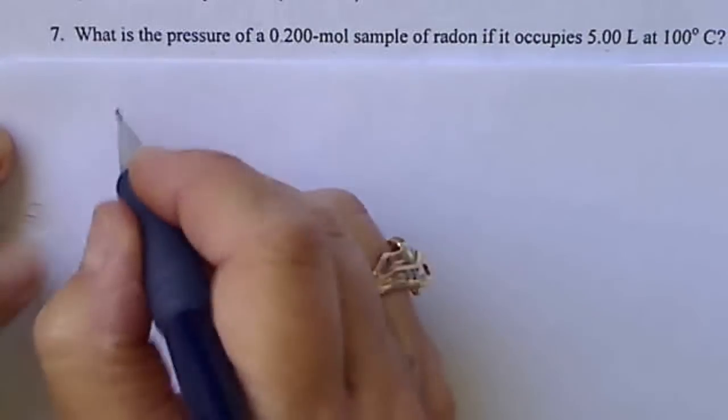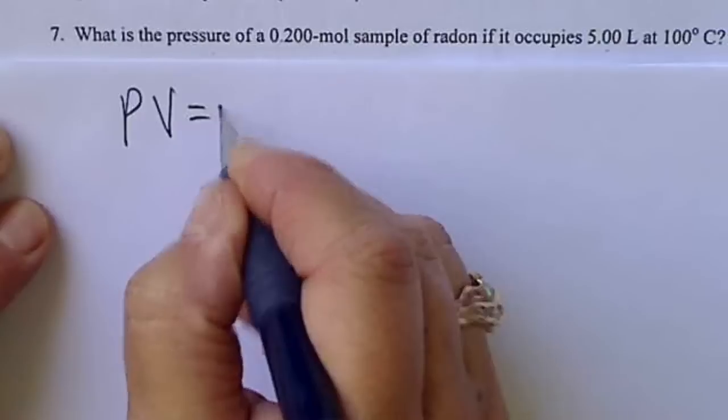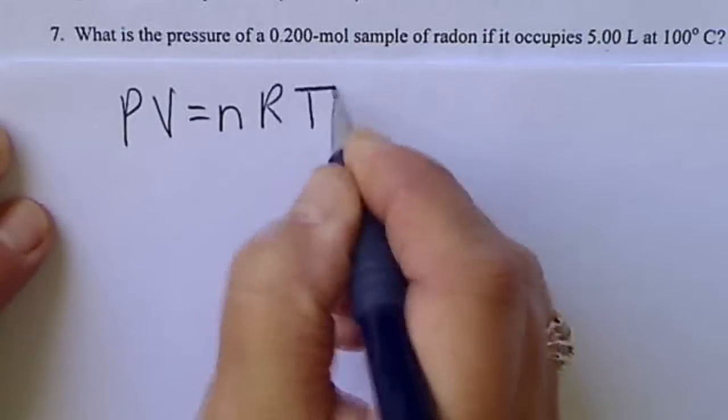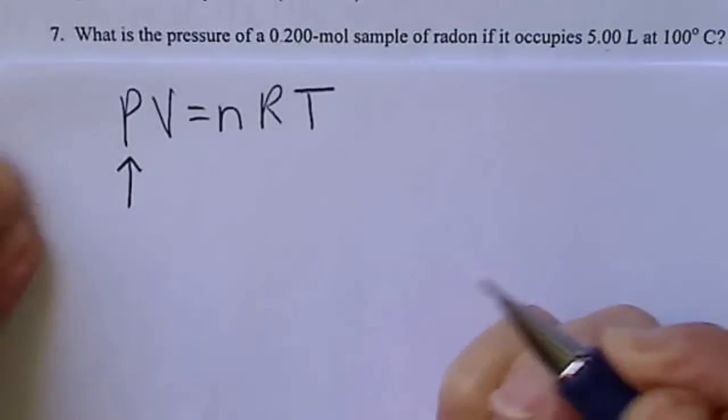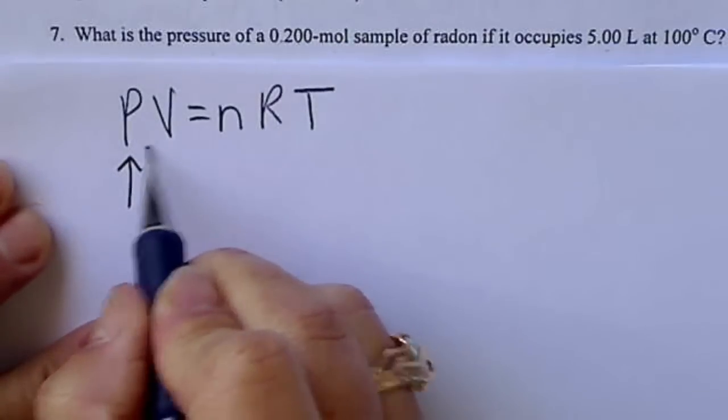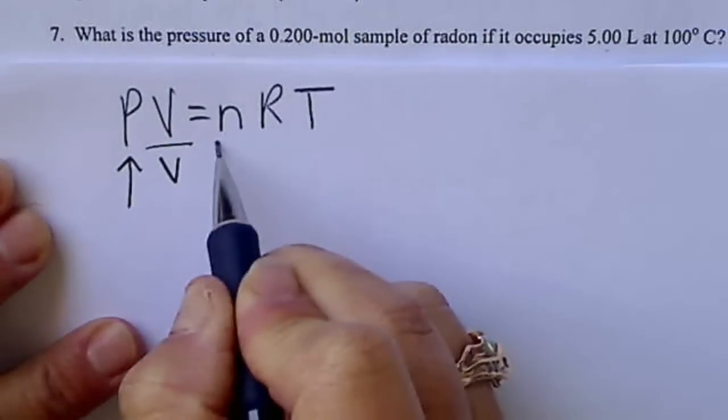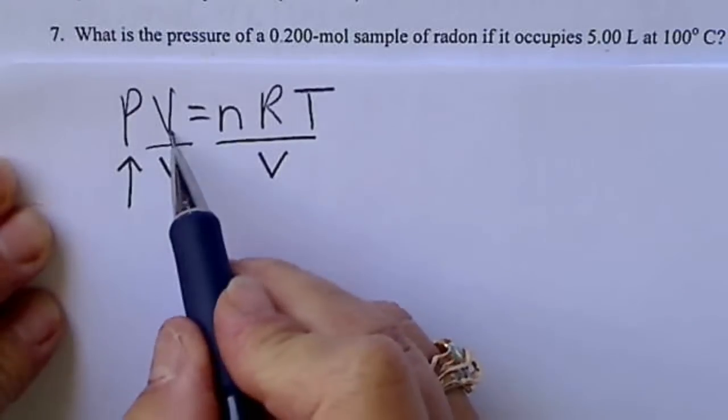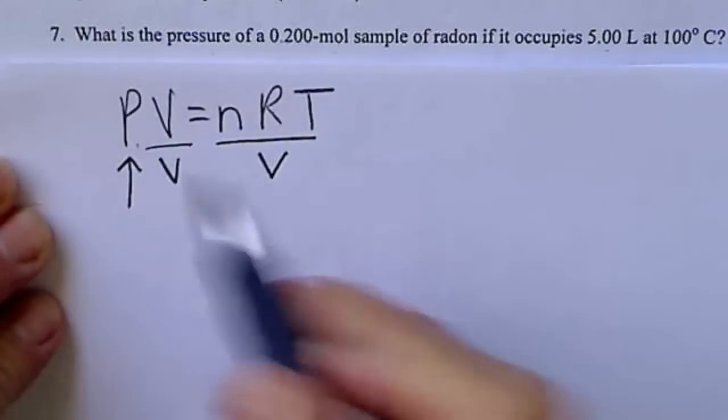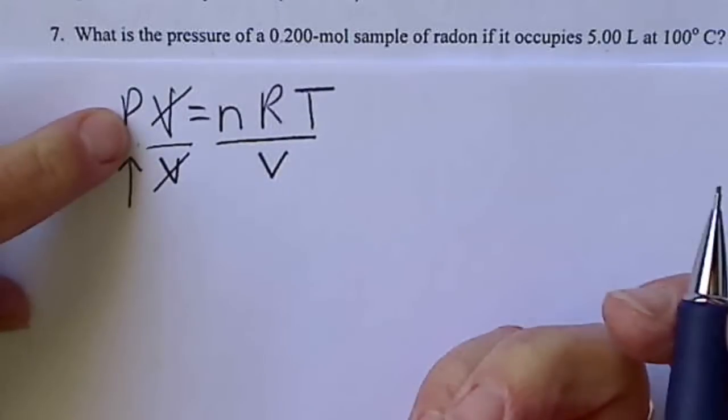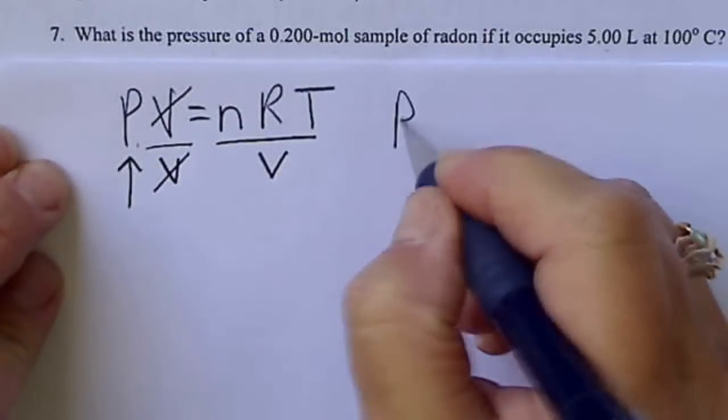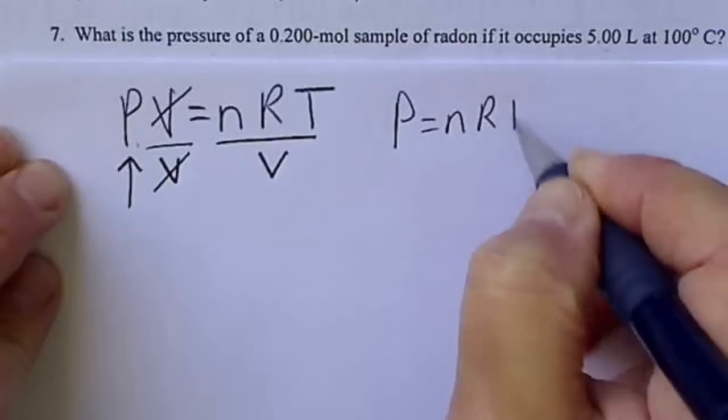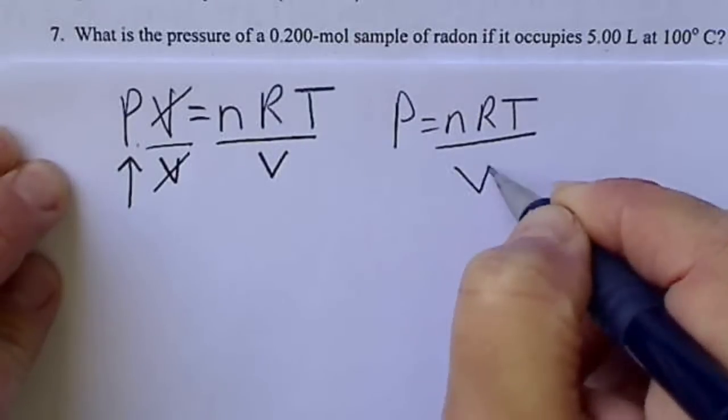So if we solve this by the ideal gas law, PV equals nRT, we're solving for pressure. I'm going to divide both sides by V because I've got to get P all by itself. So I divide by V just to cancel that. So pressure is equal to nRT over V.